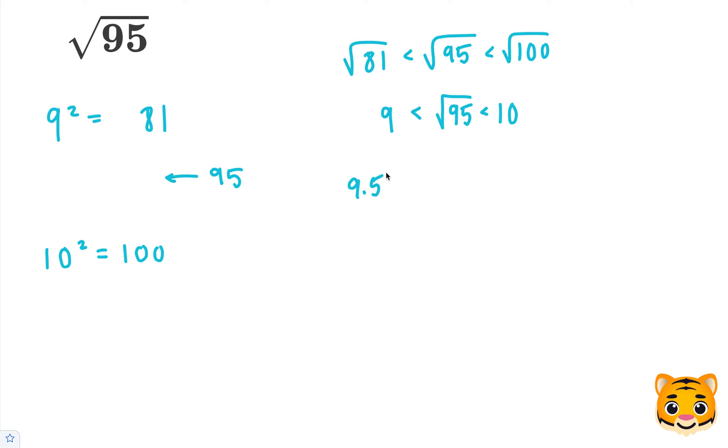Let's try 9.5 squared first, which is 9.5 times 9.5. 5 times 5 is 25, carry the 2. 9 times 5 is 45, plus 2 is 47, add our 0. 9 times 5 is 45, carry the 4. And then 9 times 9 is 81, plus 4 is 85. When we add these together, we end up getting 90.25.